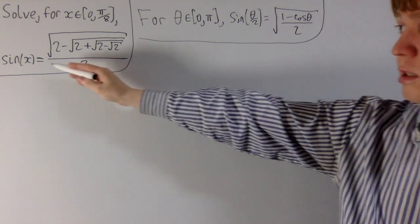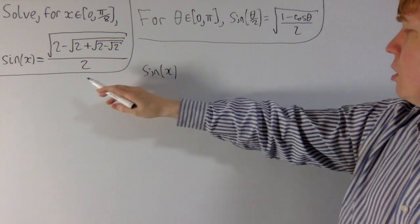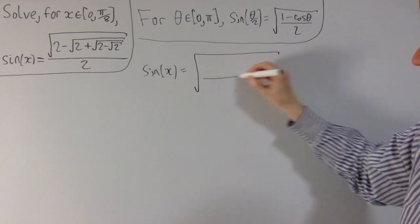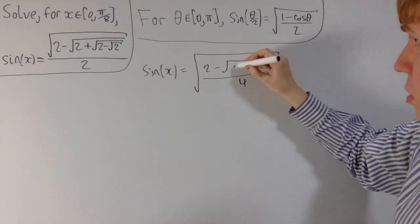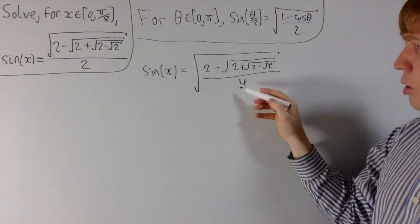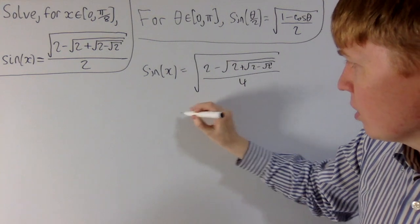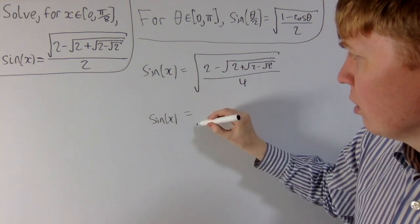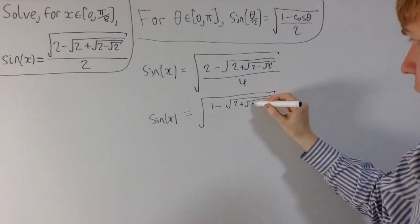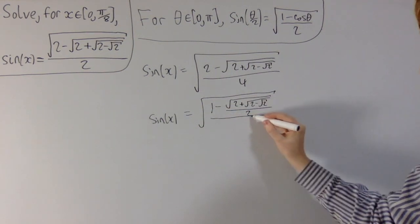Now we'll have a go at applying this to tidy up our expression. We start with sine x equal to all of this. We need everything inside the square root, so I'll take the 2 inside the square root — it gives a 4 in the denominator. Everything else stays: 2 minus the square root of 2 plus the square root of 2 minus the square root of 2. Then we divide the top and bottom of the fraction by 2, so this looks like 1 minus something over 2. So sine of x equals the square root of 1 minus, then 2 plus root 2 minus root 2, all divided by 2.